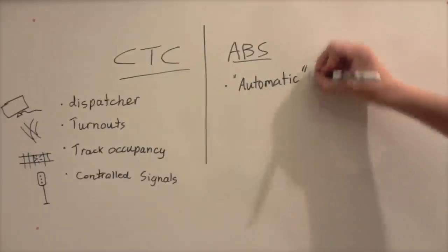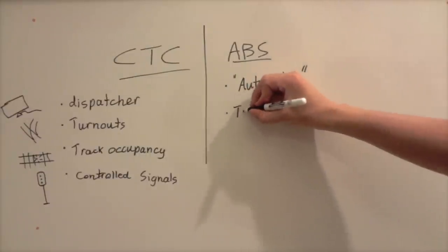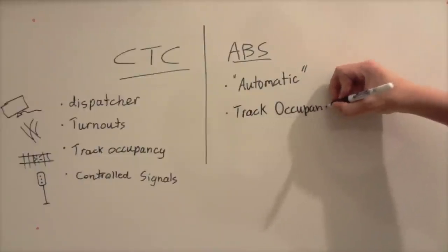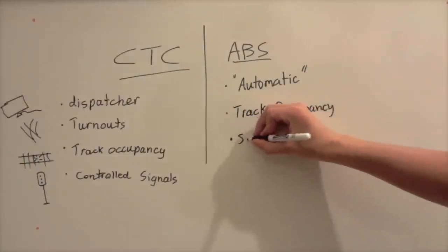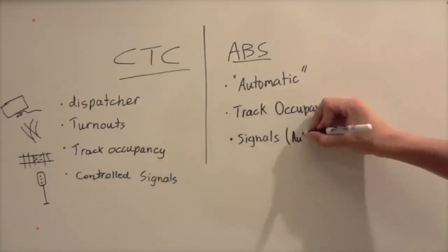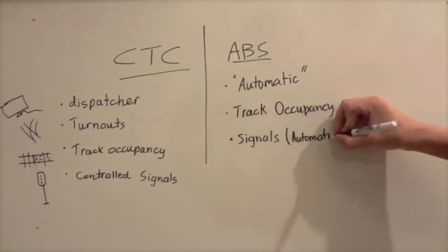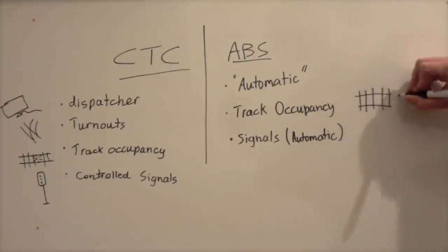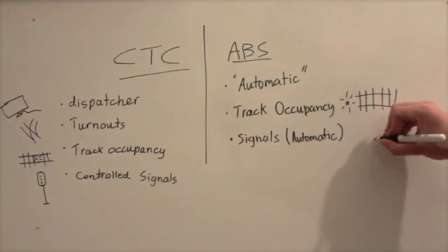ABS stands for automatic block signaling. And these signals operate automatically. The whole system is automatic. And they also relay track occupancy, but they relay the information to a computer which automatically generates signal indications. And usually these are found on less busy rail lines. And like I said, there's no dispatcher. It's automatic. So they are less busy rail lines typically.